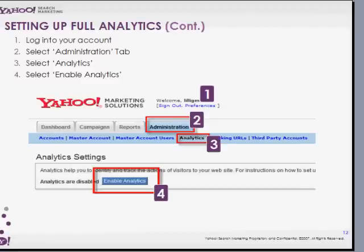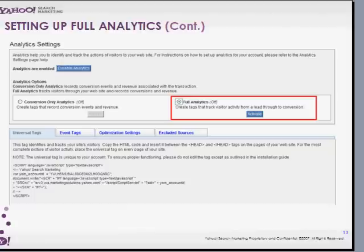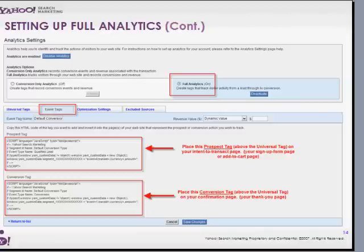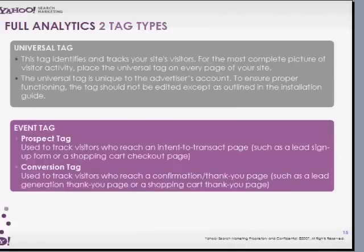Setting up full analytics: simply log into your account, click on the Administration tab, click on Analytics, and select Enable Analytics. From there you're given the opportunity to activate full analytics — simply click Activate. The universal tag is then available to you once you activate. From there, click on the Event Tags tab, and you have the prospect tag and the conversion tag available to you. The prospect tag is used to track an intent to transact, and the conversion tag is used on the confirmation page as a call to action.